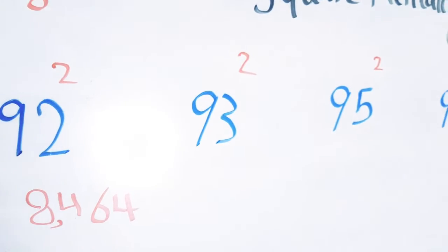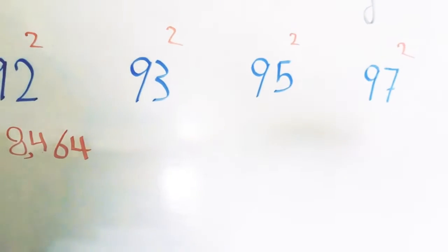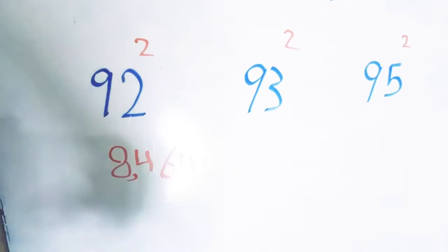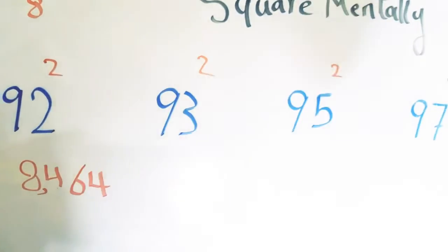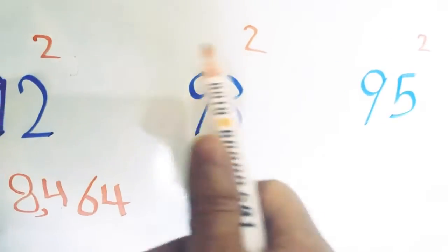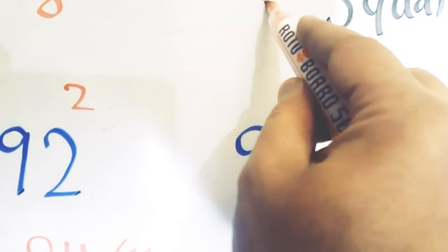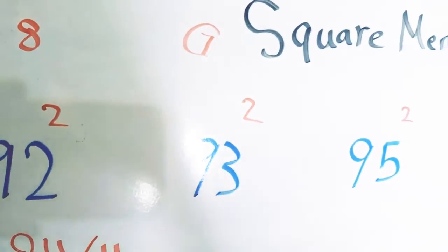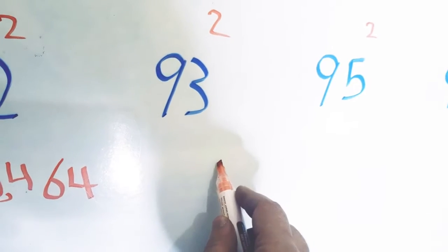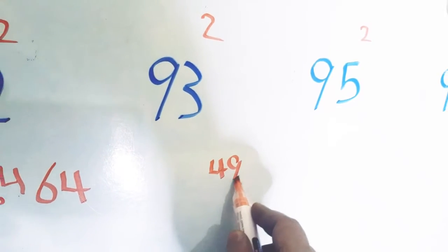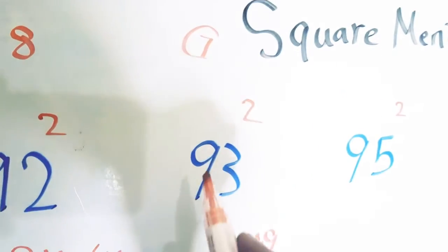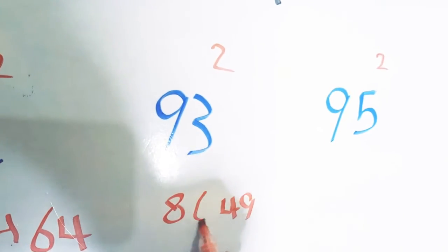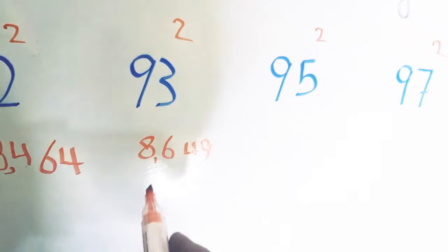Let's look at the next example: 93. We all know that 93 is located between 90 and 100, so we apply the same trick. We subtract 93 from 100 to get 7. We multiply 7 by 7 to get 49. Then we subtract this 7 from 93 to get 86. So the answer is 8,649.